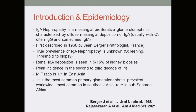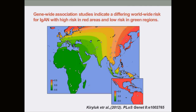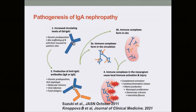IGA nephropathy is a mesangial proliferative glomerulonephritis characterized by diffuse mesangial proliferation of IGA. It is the commonest glomerulonephritis worldwide, but the incidence varies by geographical area — mostly in the far east and eastern regions — and it is very rare in sub-Saharan Africa.